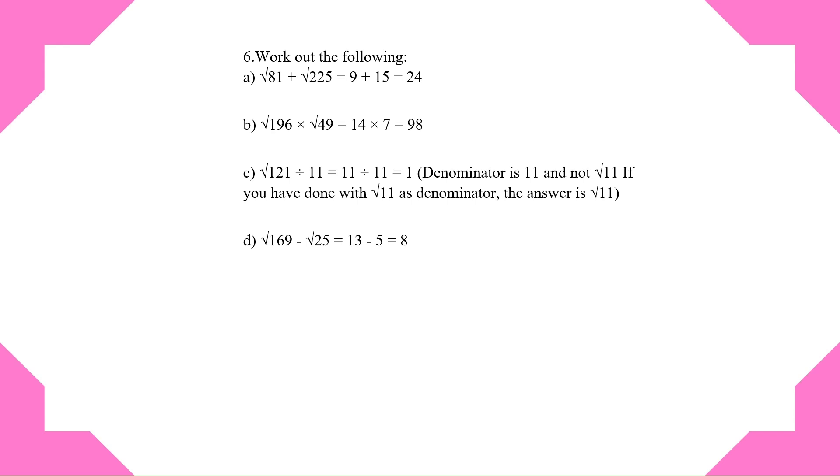Here are the answers to question 6. In question C, there is square root of 121 divided by 11 and not square root of 11. So the answer is 1. If you have done with square root of 11 as denominator, the answer is square root of 11.